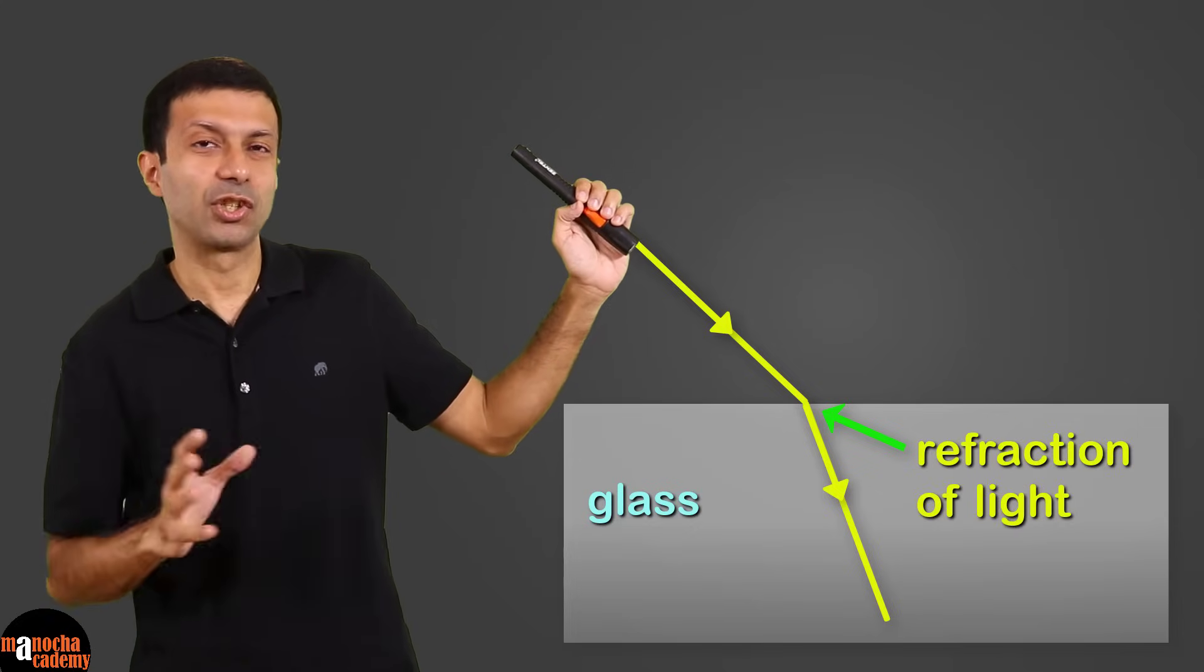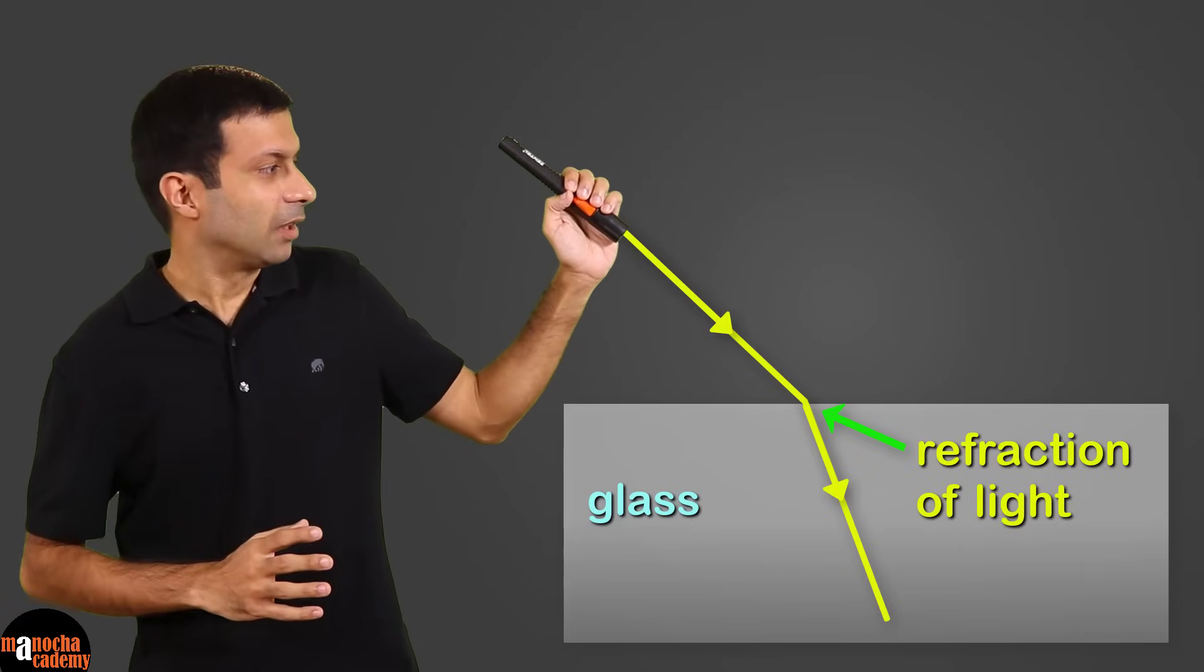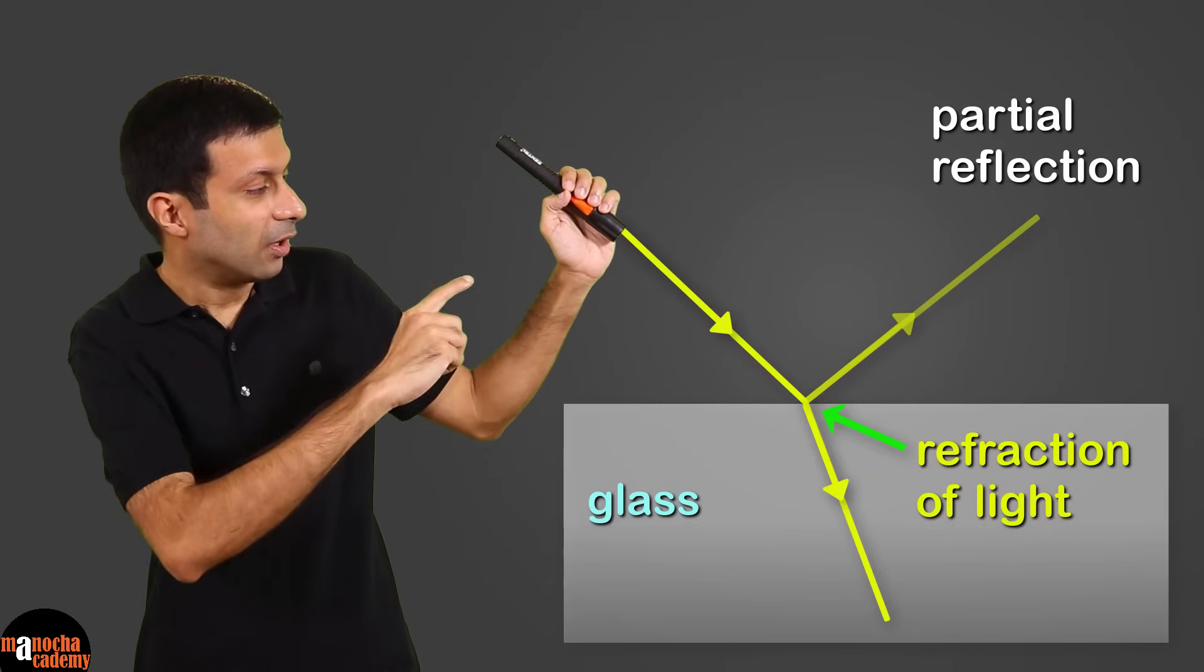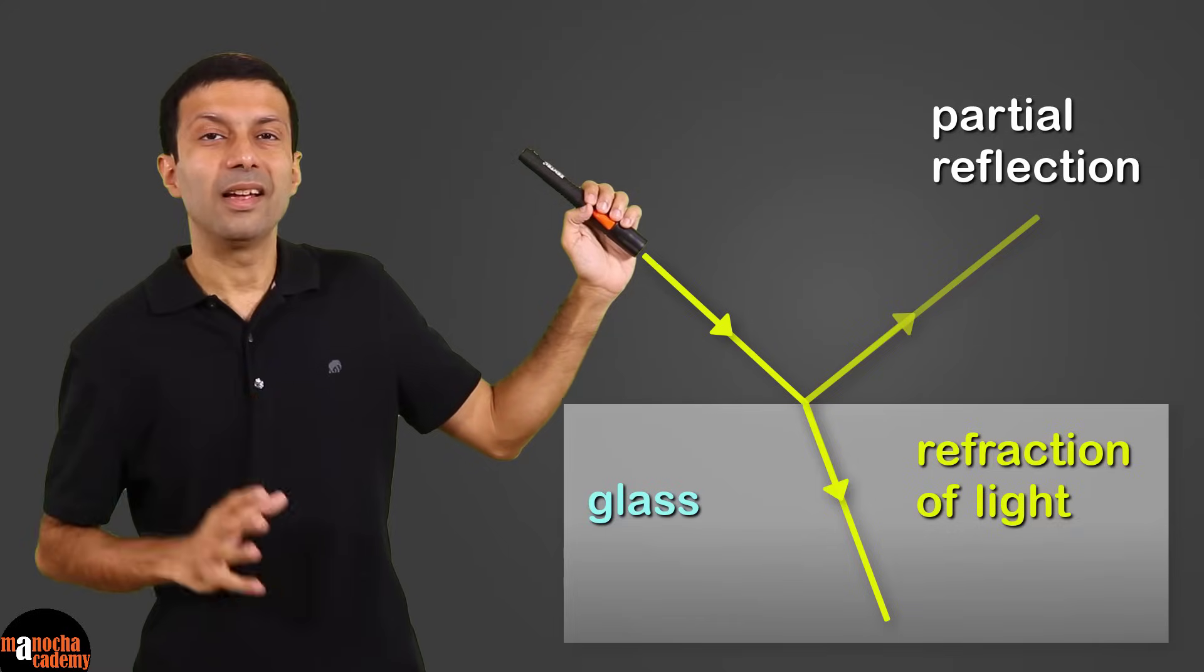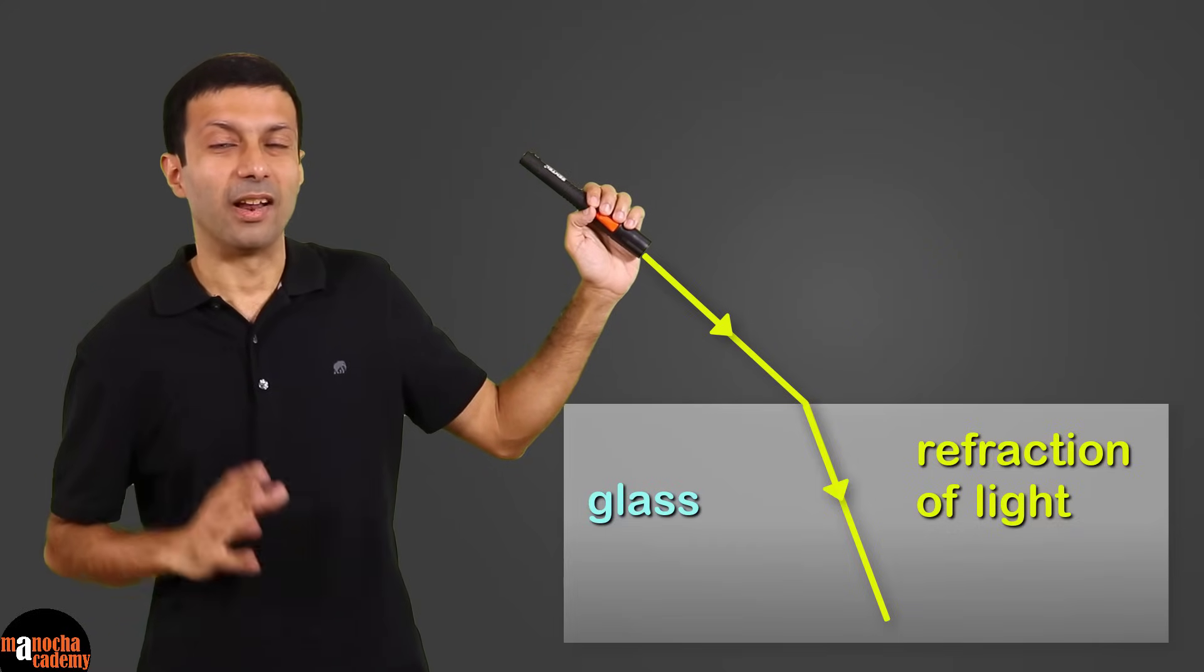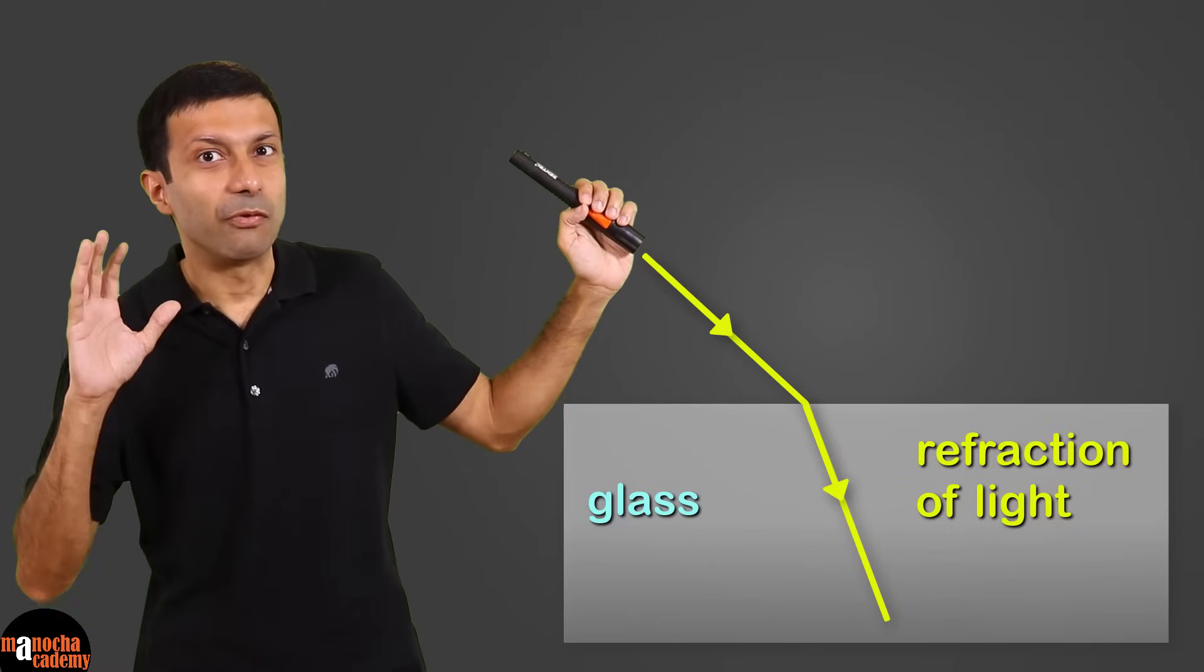This is known as refraction of light. There is also a partial reflection when the light hits the glass surface. But we'll ignore that for this video. And our focus will only be on refraction of light.